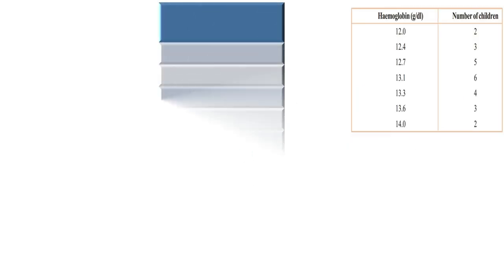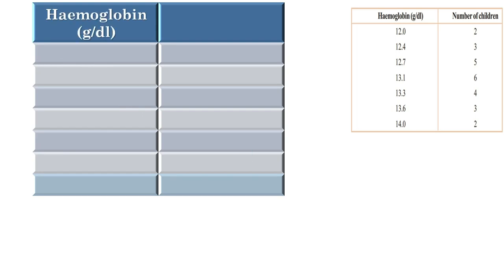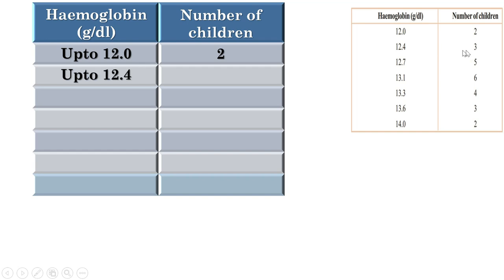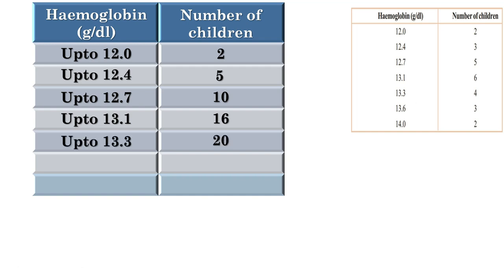We can make a table with the same headings — hemoglobin and number of children. Up to 12, there are 2 children. Up to 12.4, there are 2 plus 3, or 5 children. Up to 12.7, there are 5 plus 5, or 10 children. Up to 13.1, there are 10 plus 6, or 16 kids. Up to 13.3 there are 20, up to 13.6 there are 23, and up to 14 there are 25 kids. This is called a cumulative frequency table.